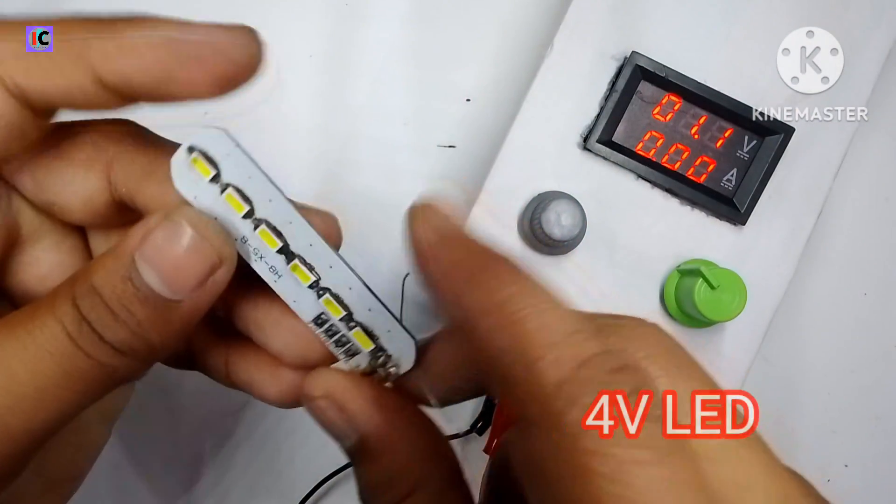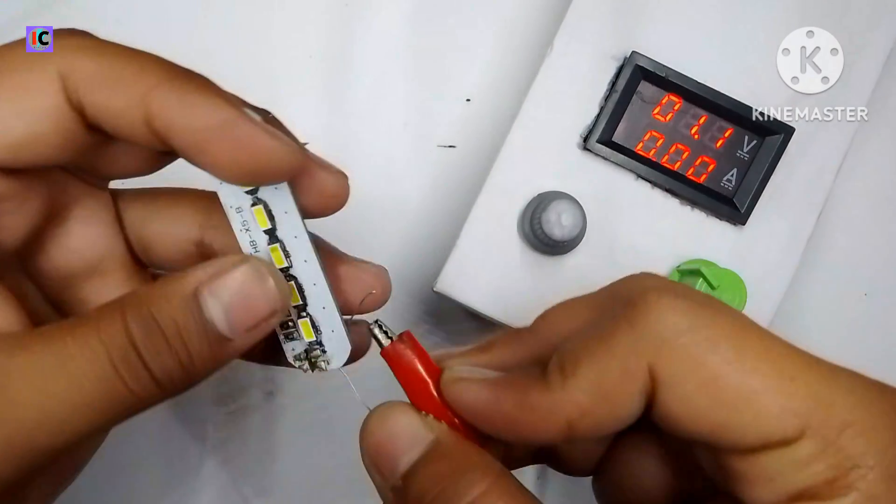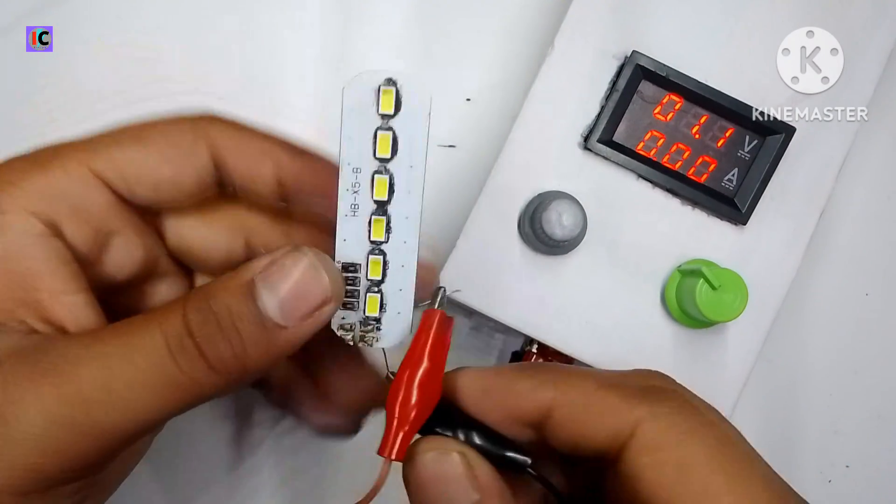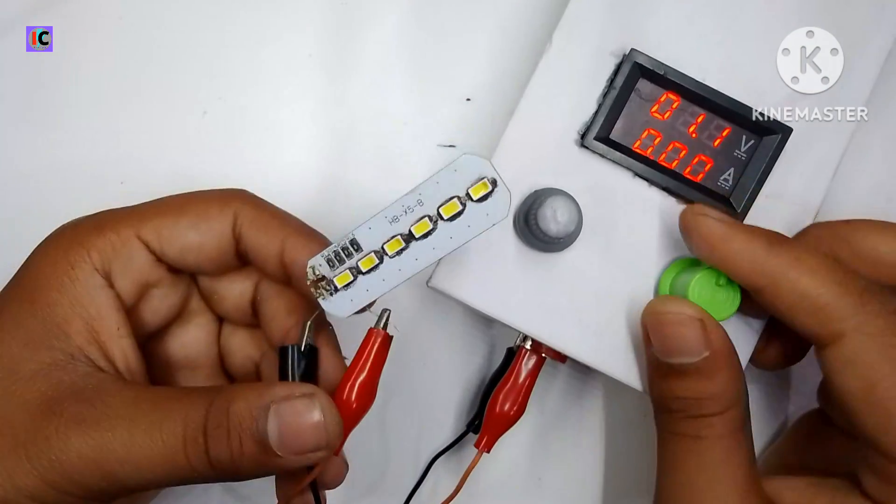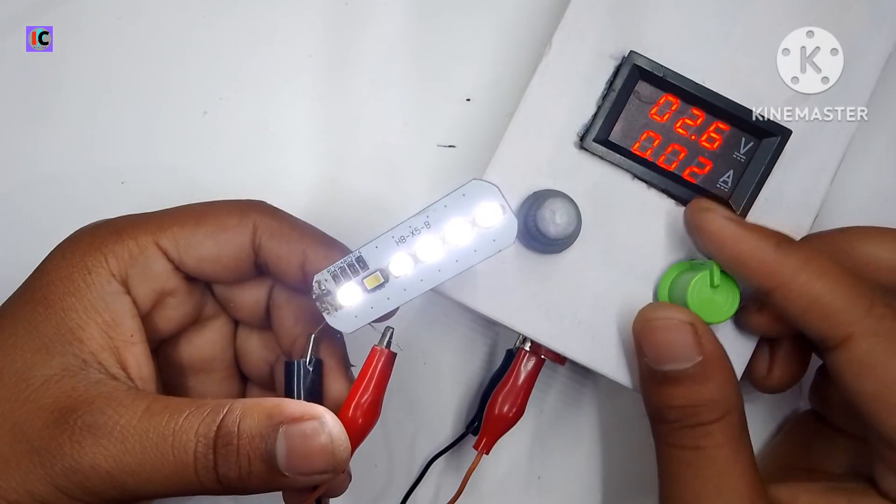And here I am testing a 4 volt LED as a load test, and also I will show the constant current feature. So here the output voltage is 1.1 volt. Now I am increasing it above. So the LED is glowing.